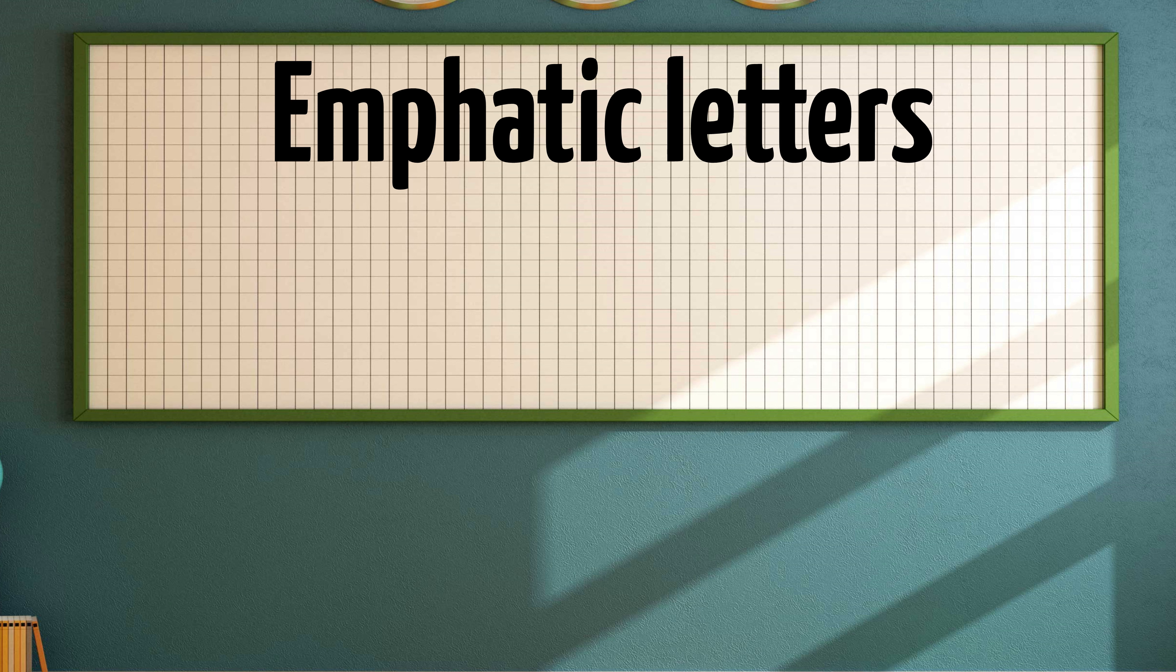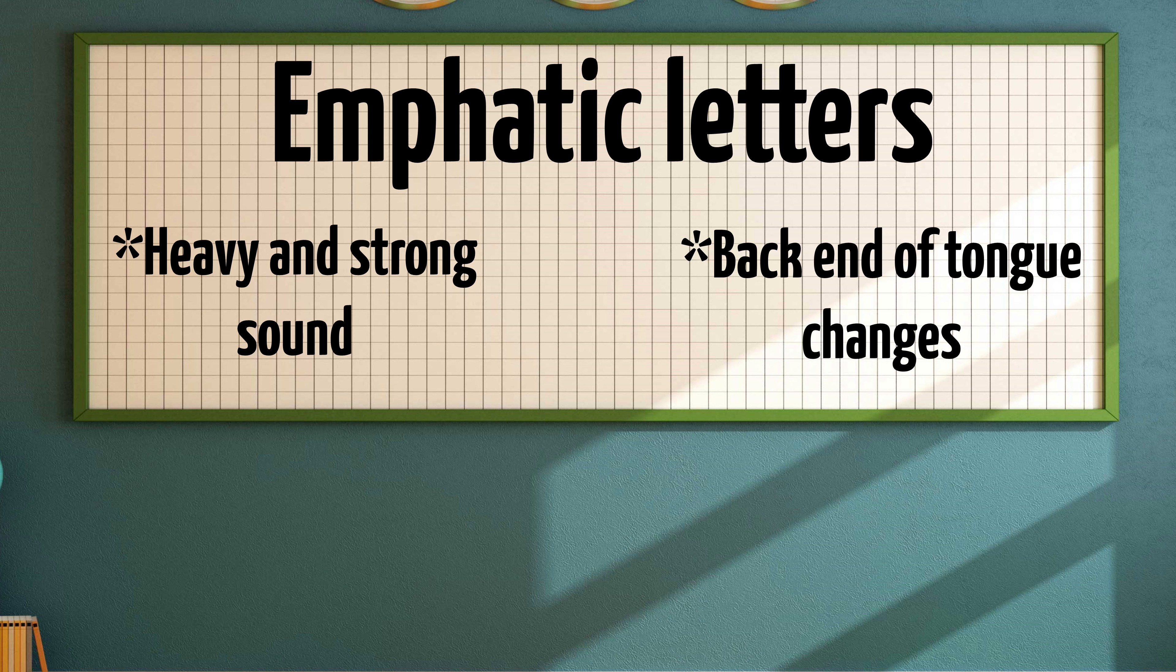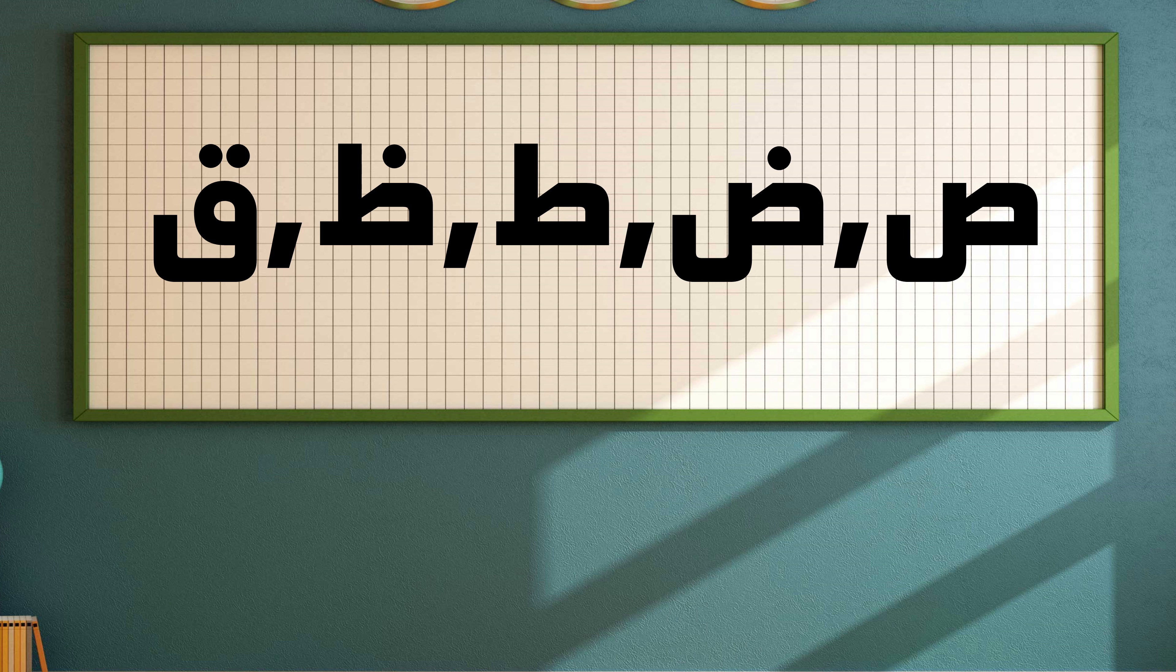Emphatic means letters that are pronounced with strong and heavy manners, and the back end of the tongue changes its position as you pronounce those letters. And the emphatic letters of Arabic are Saad, Daad, Tah, Dhah, and Qaf.